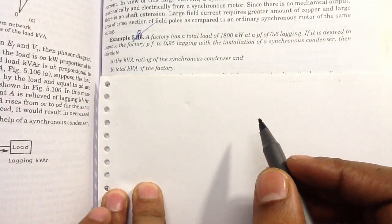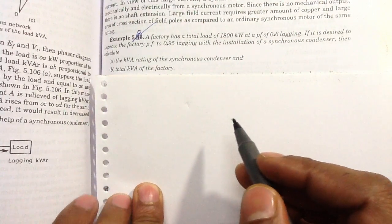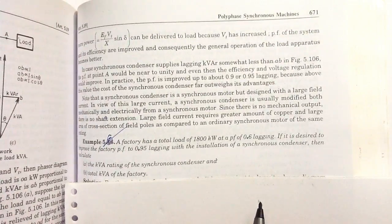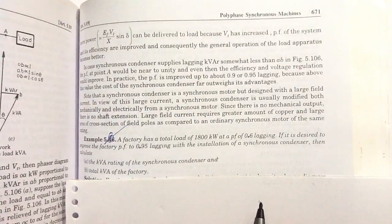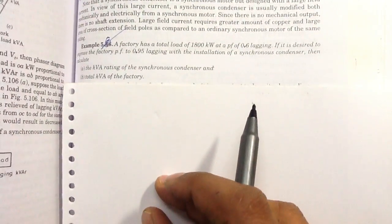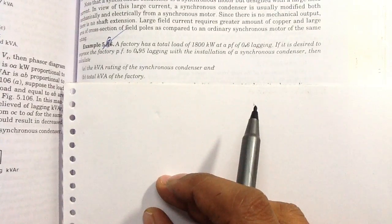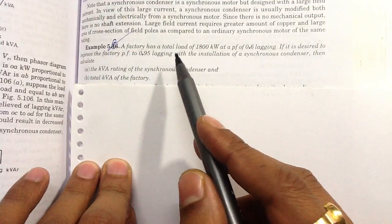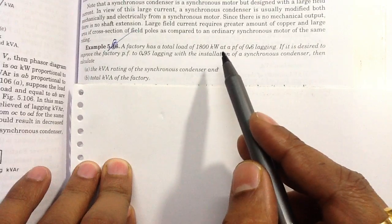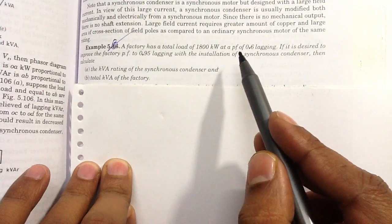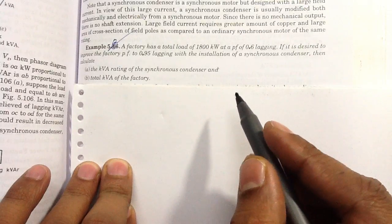Let us understand question number 5.46 from page 671 of the book by P.S. Bheemra. According to this question, a factory has a total load of 1,800 kilowatt and the factory is operating at a power factor of 0.6 lagging.